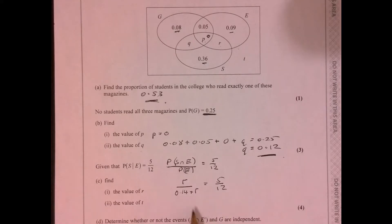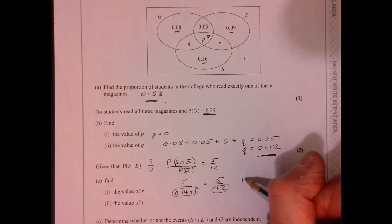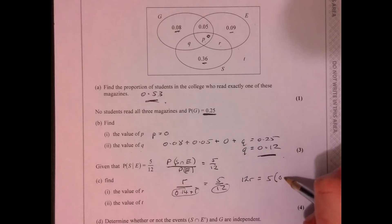Now, with a little bit of rearranging, we can multiply both sides by this bit, by this bit just here. And that gives us 12R equals 5 times 0.14 plus R. And then if you multiply this out, we've got 0.7 plus 5R. And then that gives us 7R equals 0.7 divided by 7. So R equals 0.1.